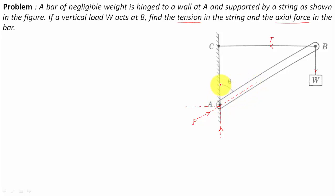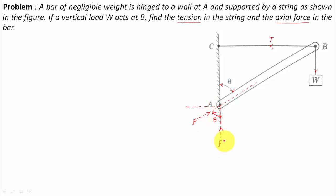Watch carefully — these two lines are intersecting at point A, and the angle here is theta. Hence this also works out as angle theta. So if the axial force is P, then its horizontal component is P cosine theta and the vertical component is P sine theta. We've got all the forces worked out.